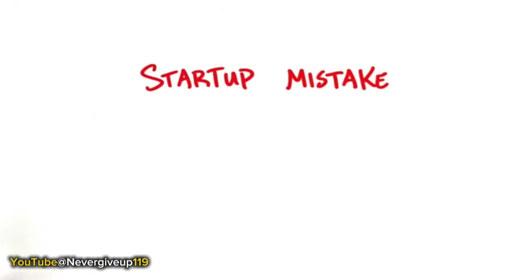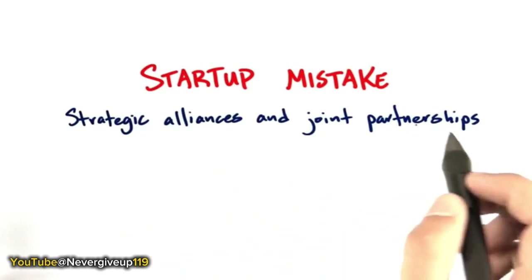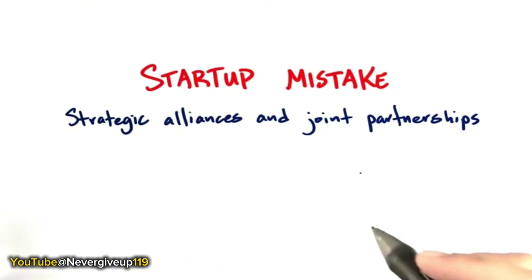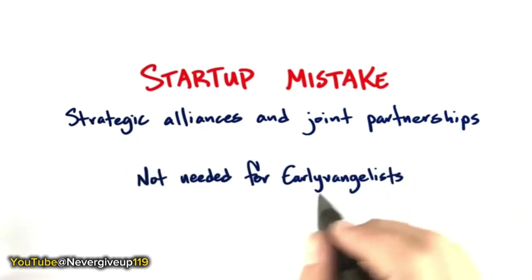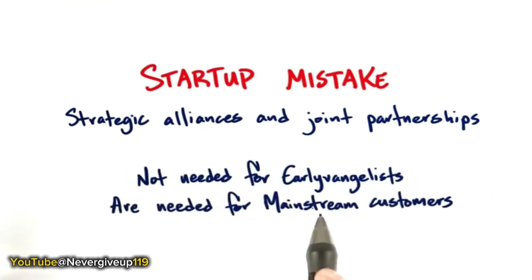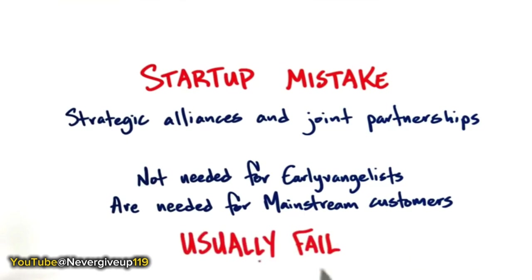One of the biggest mistakes startups make is confusing strategic alliances and joint partnerships for what you need on day one. In an existing market you might actually need these, but in a re-segmented and certainly a new market, these are not needed for early evangelists. You need to think through when you need joint partnerships and when you'll be hitting mainstream customers, because remember, most of these partnerships tend to fail.